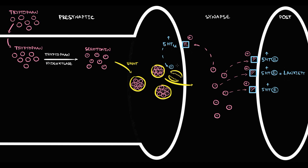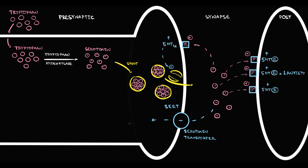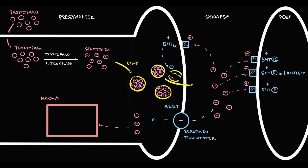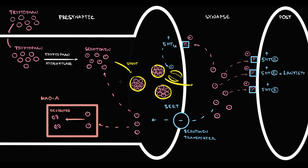But what happens to serotonin molecules that simply did not have time to bind to any receptor? On the presynaptic neuron we have a serotonin transporter called SERT. This transporter uptakes free serotonin molecules and delivers them back to the presynaptic neuron, where monoamine oxidase A is waiting for them. Most of the delivered serotonin molecules are destroyed by monoamine oxidase, but some are able to slip away and rejoin the newly formed serotonin pool.